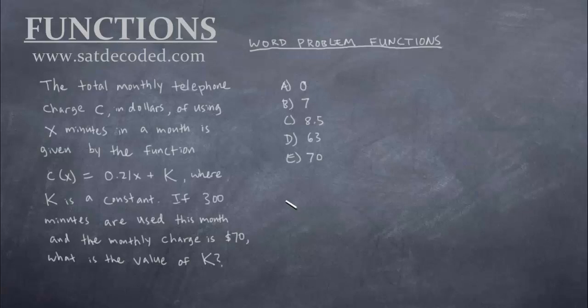So it'll make more sense when we take a look at the example. The question says the total monthly telephone charge c in dollars of using x minutes in a month is given by the function c(x) = 0.21x + k, where k is a constant. If 300 minutes are used this month and the monthly charge is $70, what is the value of k? And of course these right here are potential k values.